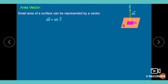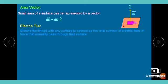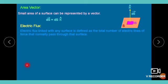The representation is: dS̄ = dS · n̂. Now, what is electric flux? The number of electrostatic field lines passing through any surface is called electric flux. These two concepts — area vector and electric flux — are important for calculating the electric field.